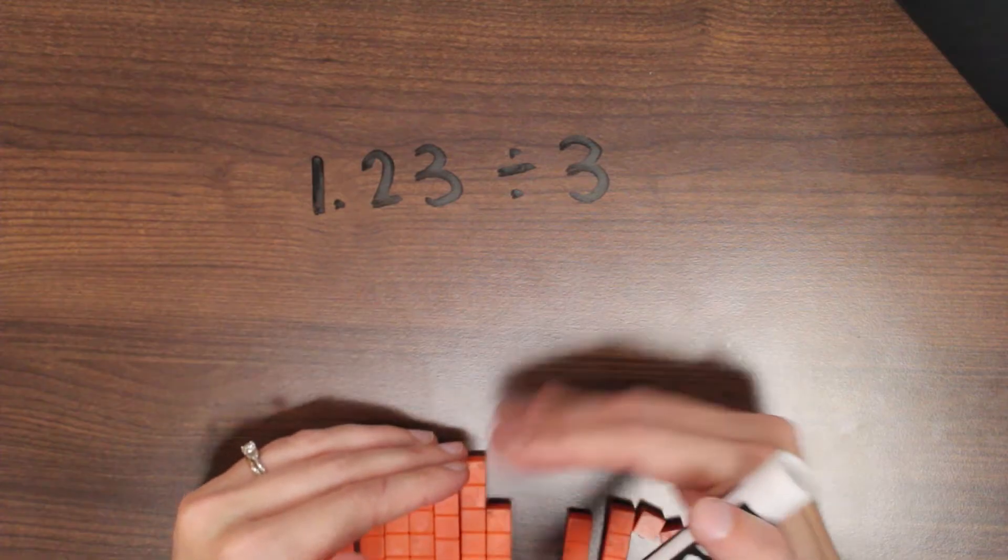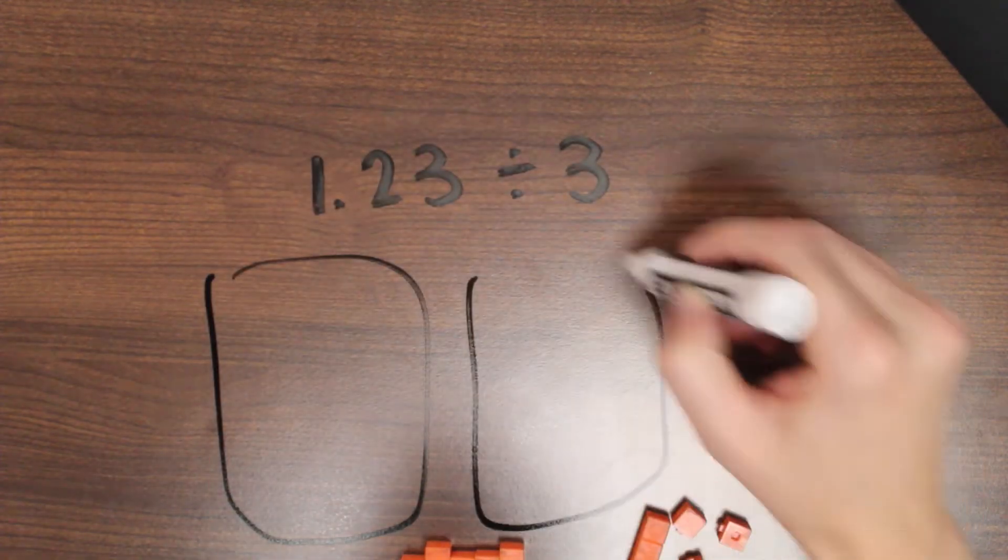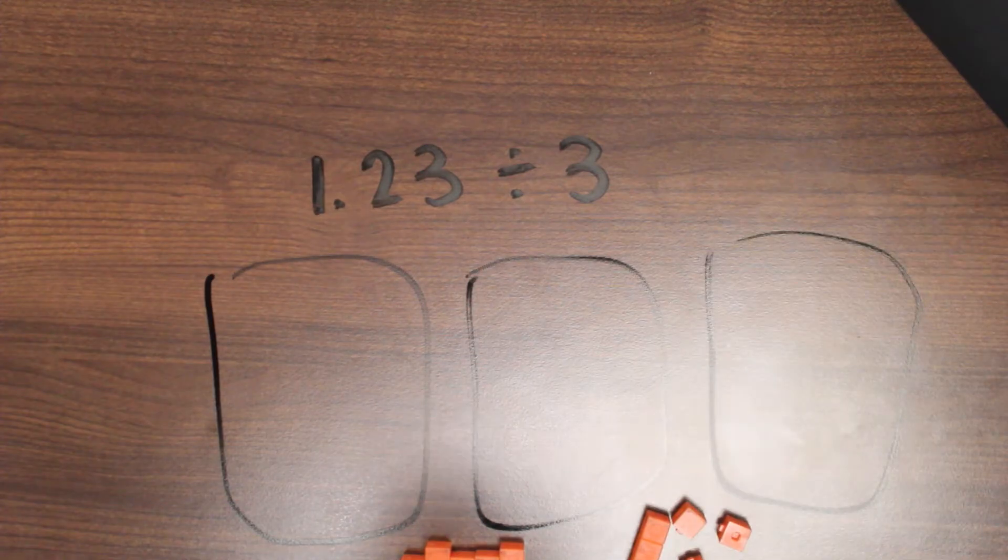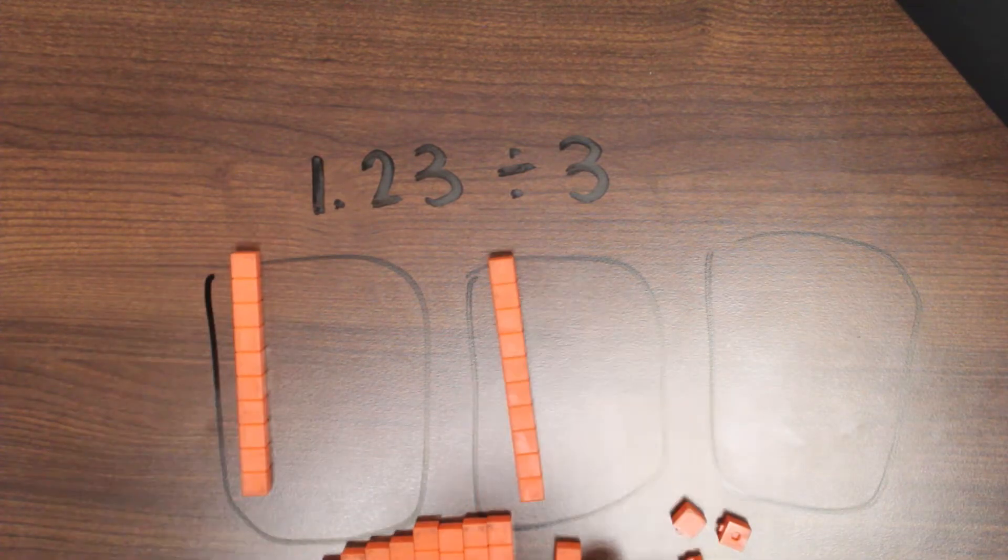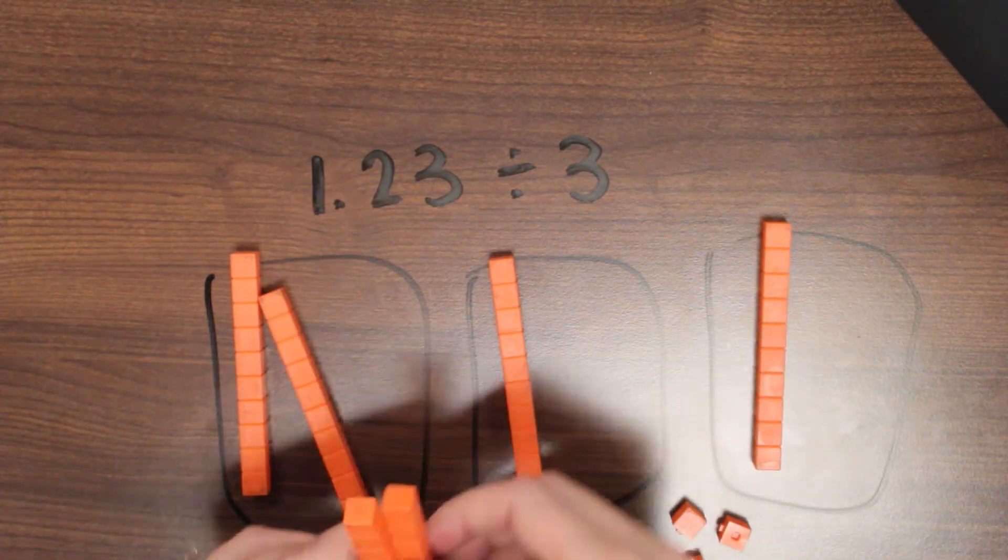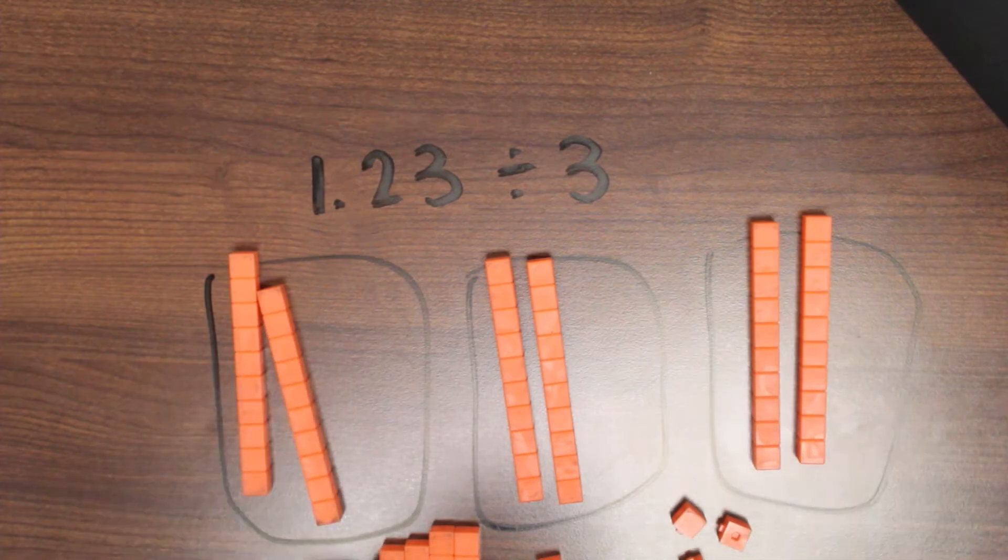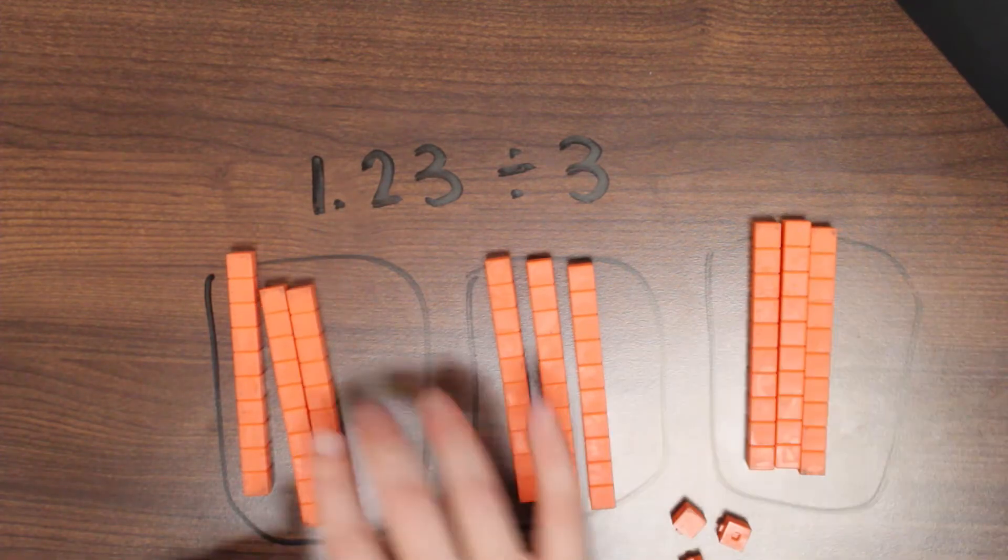So we'll kind of pull these to the side. I want three groups. So one, two, three groups. They're going to hang out a little bit. I'm going to start taking my tenths and splitting them up. One in each group. I still have more, so let's do it again. Still have more. Let's do it again. Still have more.